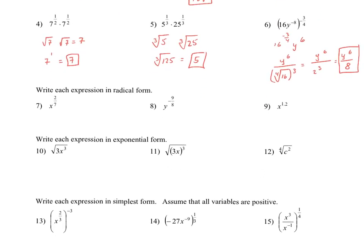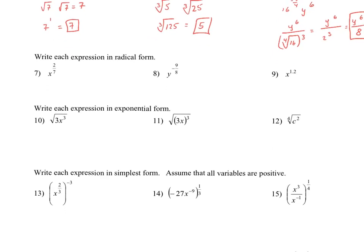I'm going to have you try a couple here. Taking an expression in fractional exponent form and putting it in radical form, the denominator becomes the root index, and the numerator becomes the exponent — which can be written either inside the radical or outside. On problem number 10, taking an expression in radical form and changing it to exponential form — anything without an exponent, give it a 1, and anything without a root index, we understand it's a 2. So this becomes 3 to the 1/2, x to the 3/2. I'm going to pause the video — go ahead and finish problems 8, 9, 11, and 12.